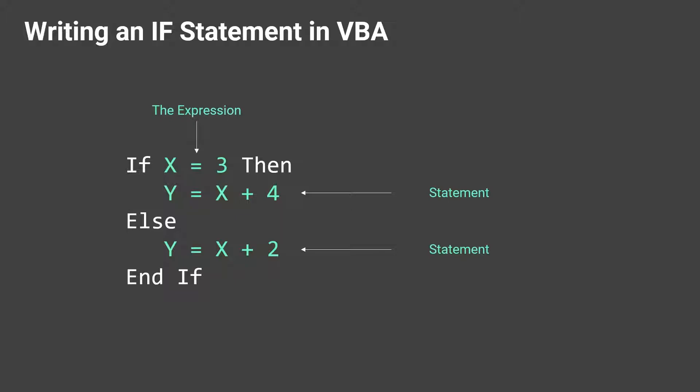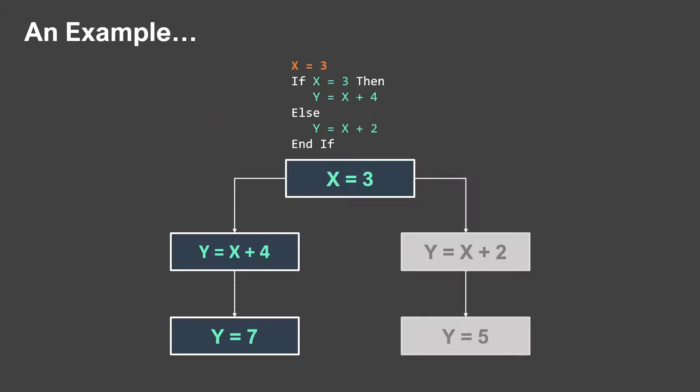Writing an IF statement in VBA is very simple. You always start with the IF keyword, then the expression you're evaluating, then the THEN keyword. Anything below THEN is included in the true path — so if the expression evaluates to true, those statements execute. You can also include an ELSE section: if the expression evaluates to false, the statements under ELSE execute. Finally, you close the IF statement with END IF.